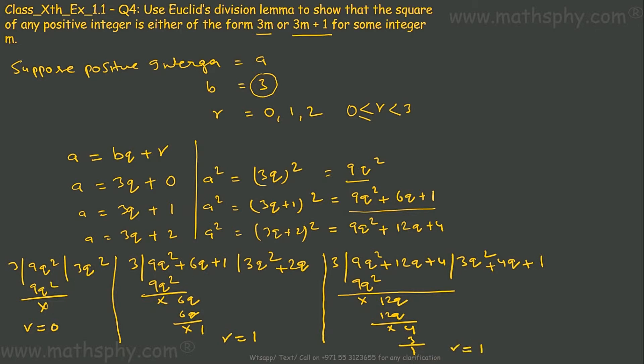So in these 3 cases of different positive integer squares, when I divide that by 3, I get remainder either 0 or 1.